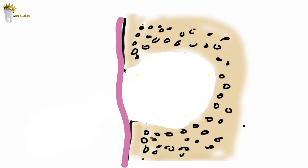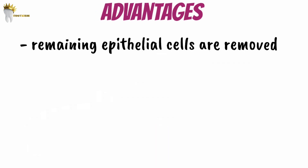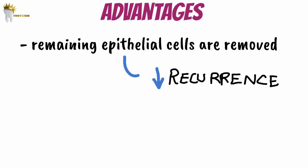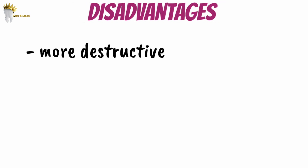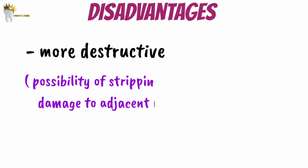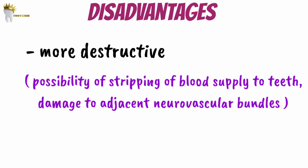The advantage of curettage is that it removes remaining epithelial cells of the cyst, decreasing the chances of cyst recurrence. The disadvantage is that it is more destructive of the surrounding bone and other tissues. For example, if curettage is done close to the root tips, we might strip the blood vessels supplying the teeth. Likewise, damage to adjacent neurovascular bundles is also possible. So curettage must always be performed with great care to avoid this.